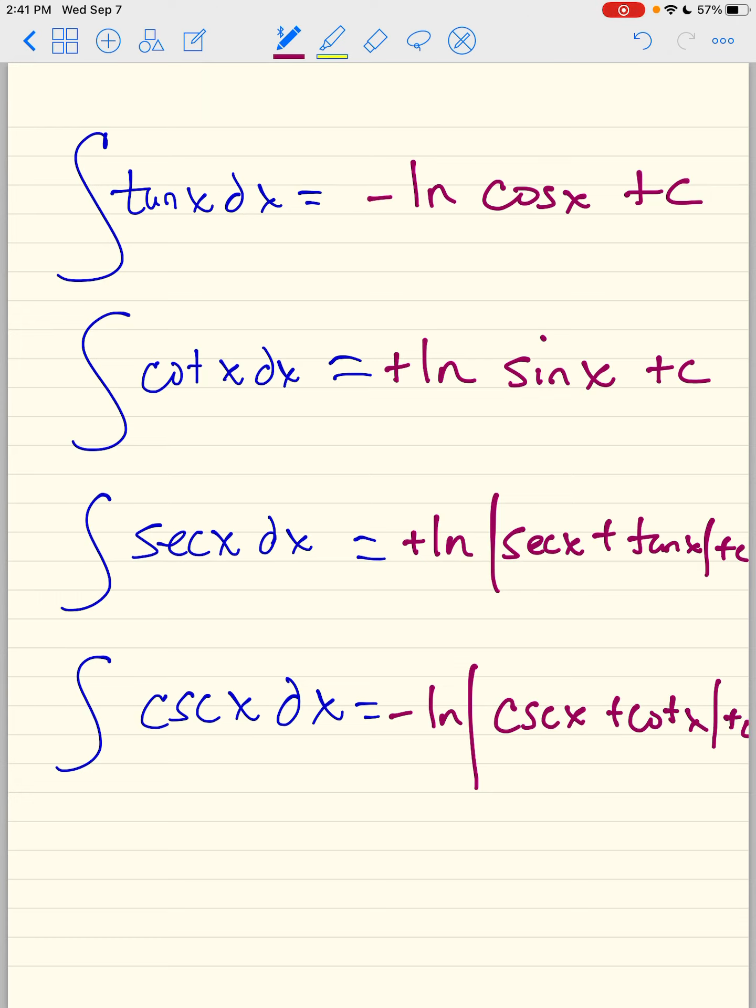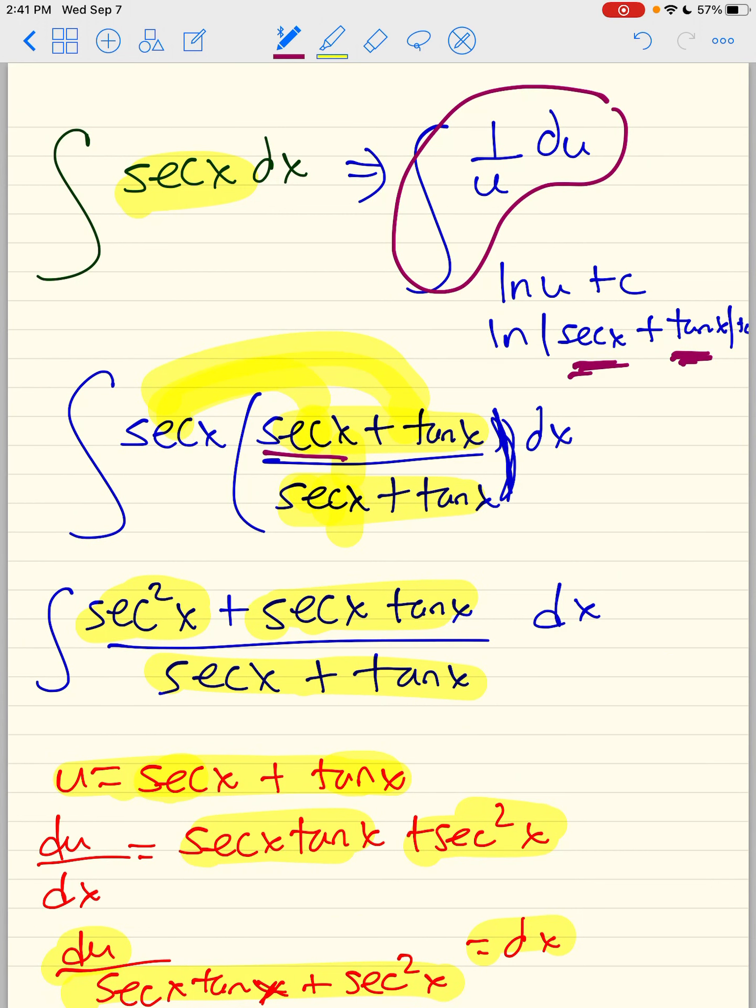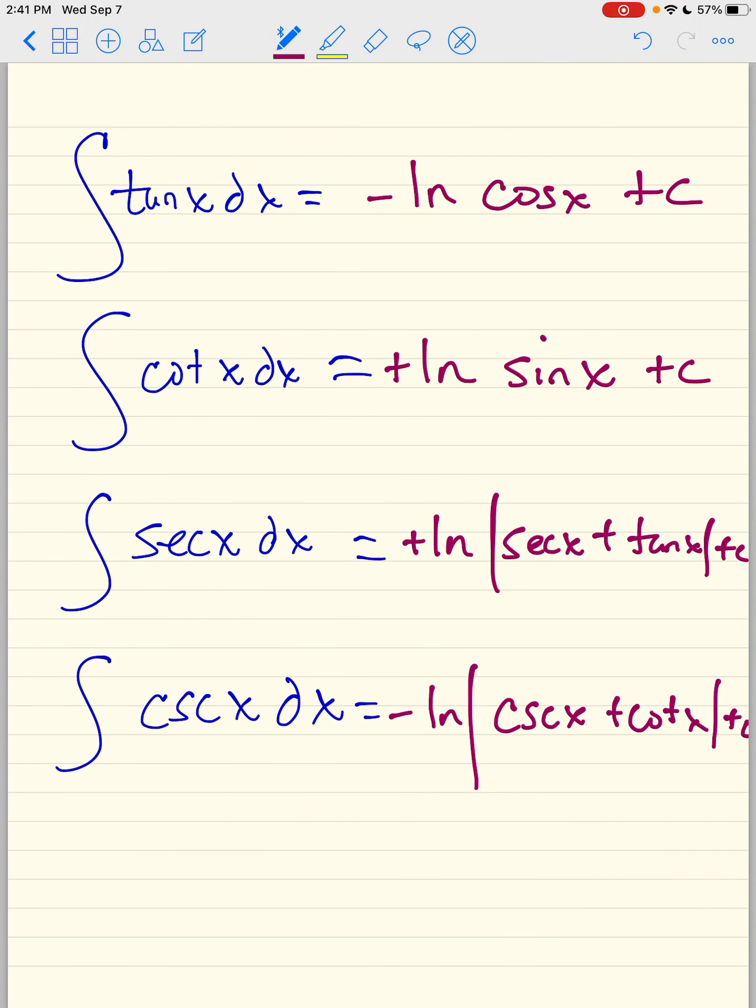And for anybody who wants to know why, it's the same procedure, but instead of secant and tan, you put cosecant and cotan. So those are the four trigs. And now you have the integral of all of the trigs. So I hope that's great. And your job is to memorize those.